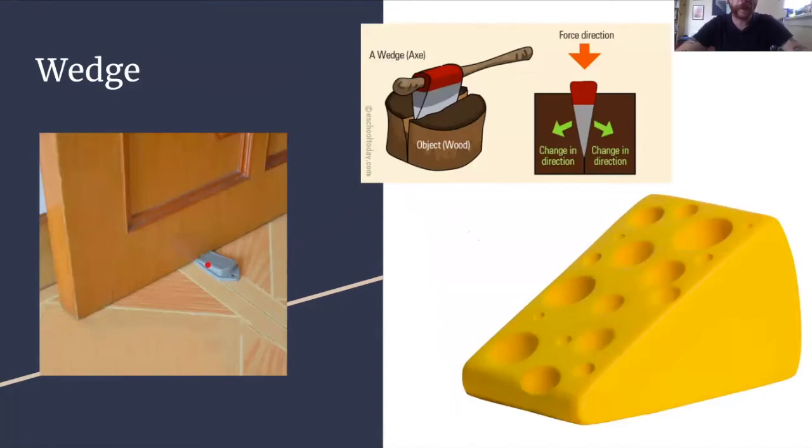It can also be used to keep things together, like a stapler. Another place you might see a wedge is on a blade. Always remember blades like scissors and knives can be dangerous, but they are in fact a wedge that comes to a sharp point.